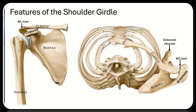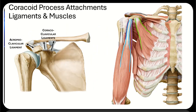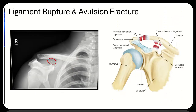Let's look at the important structures that attach to the coracoid process. There are two main ligaments: the acromioclavicular and the coracoclavicular, which has two regions — the trapezoid and conoid. There are three muscles that attach here: the short head of the biceps brachii in blue, coracobrachialis in purple, and the pectoralis minor in green.